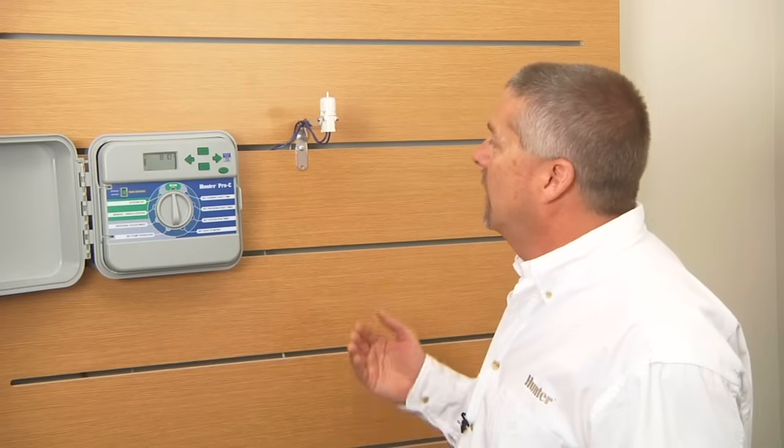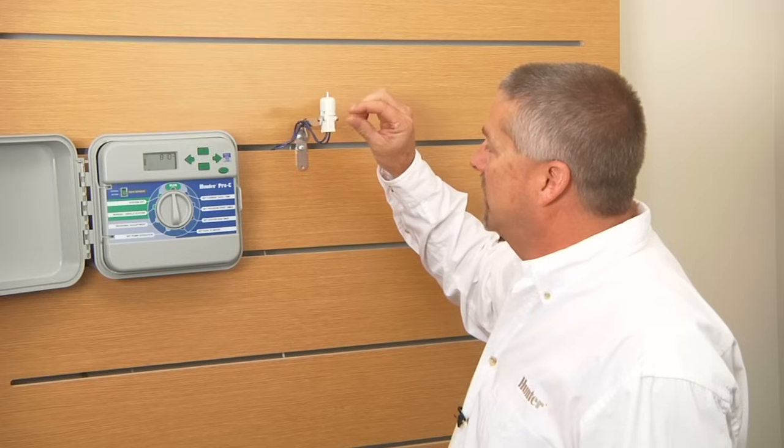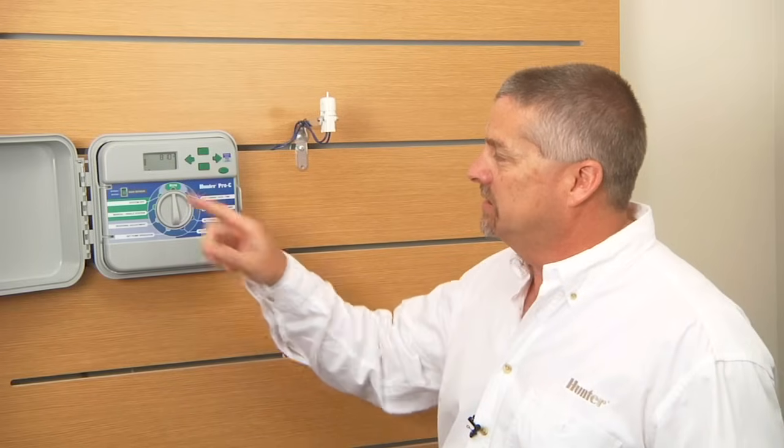A rain sensor, the basic idea is that when it gets wet, it has disks inside that expand, and when the disks expand, it opens the circuit on the controller, thus giving you your sensor off message.